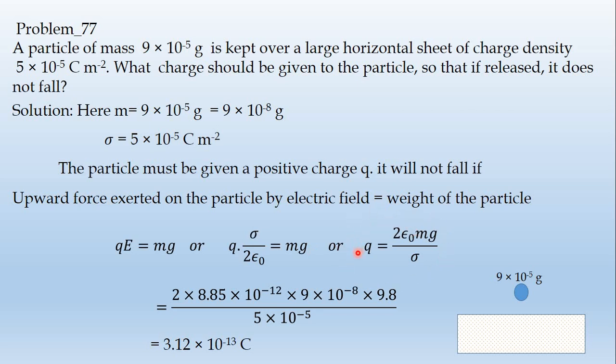If we substitute the values: epsilon naught is 8.85 into 10 to the power minus 12, m value, g value 9.8 meter per second squared. We know all values. The answer is 3.12 into 10 to the power minus 13 coulombs.